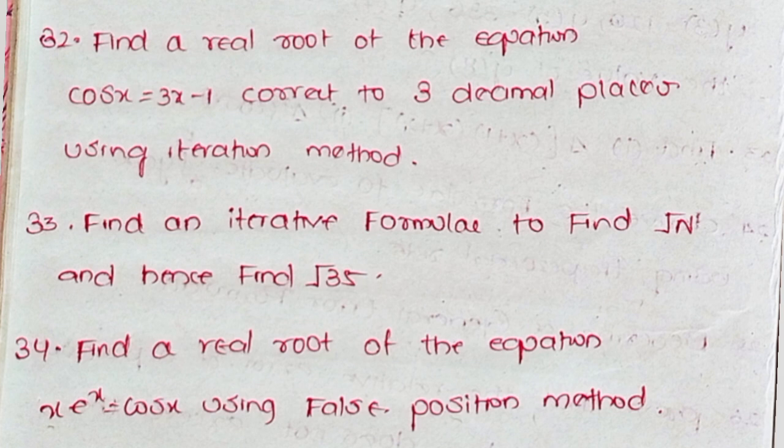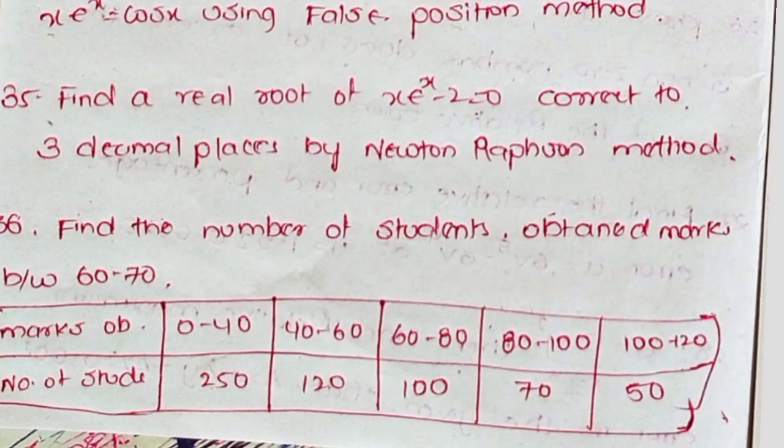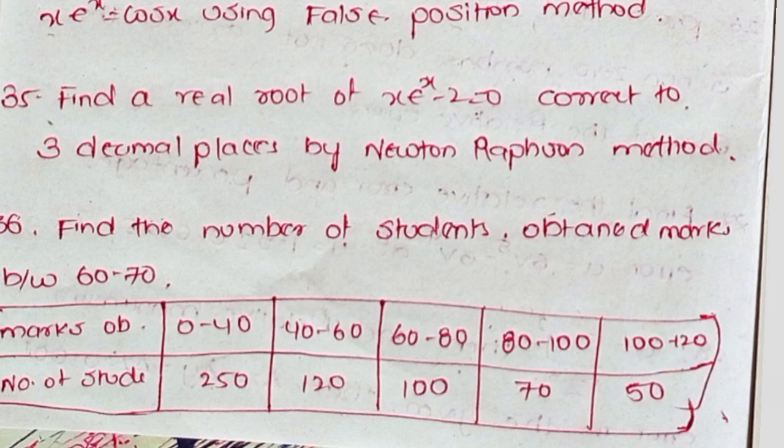Question 33: Find an iterative formula to find root n and hence find √35. Question 34: Find a real root of the equation xe^x = cos(x) using false position method. Question 35: Find a real root of xe^x - 2 = 0 correct to three decimal places by Newton-Raphson method. Question 36: Find the number of students who obtained marks between 16 to 70. Marks obtained: 0-40, 40-60, 60-80, 80-100, 100-120. Number of students: 250, 120, 100, 70, 50.